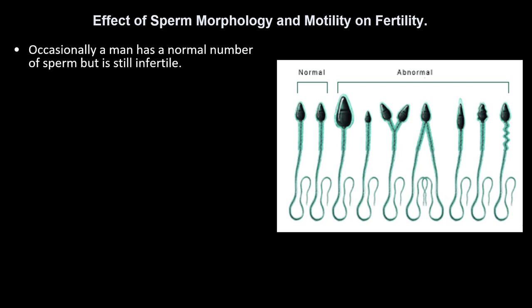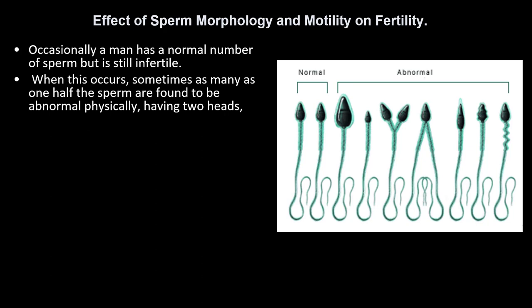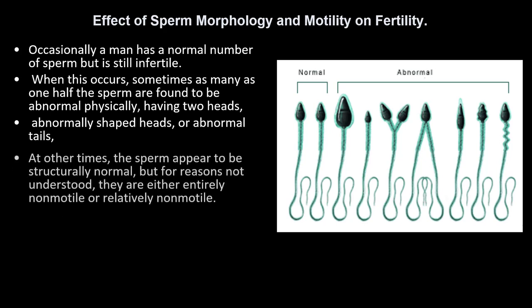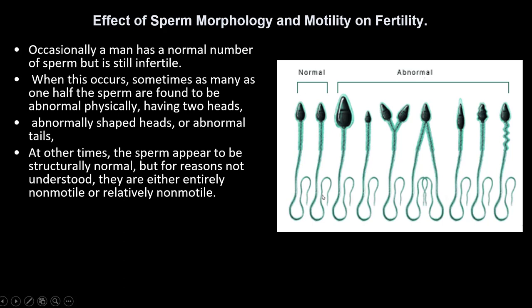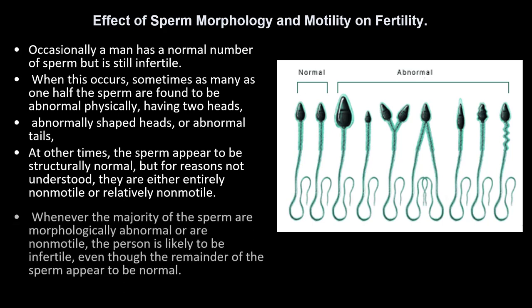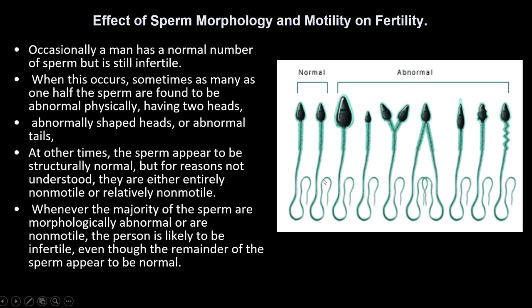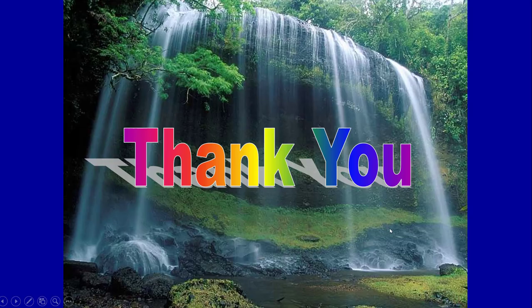A man may have a normal sperm count but still be infertile due to sperm morphology or motility issues. Sometimes as many as one-half of the sperm are found to be abnormal physically — having two heads, abnormally shaped heads, or abnormal tails. At other times, sperm appear structurally normal but are either entirely non-motile or relatively non-motile. Decreased motility also leads to infertility. Whenever the majority of sperm are morphologically abnormal or non-motile, the person is likely to be infertile even if the remaining sperm appear normal.